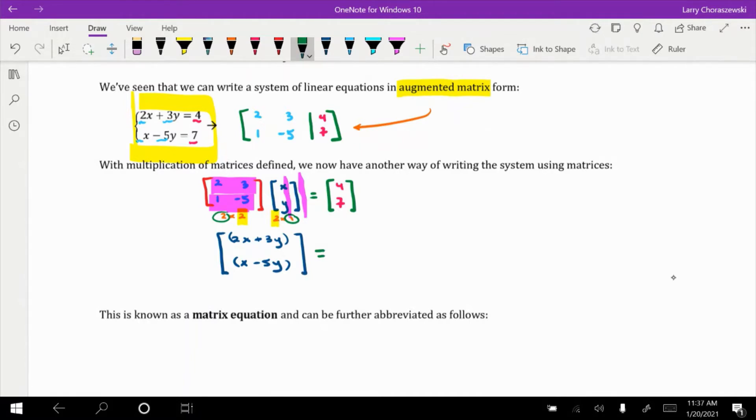Now, if this is equal to this 2 by 1 matrix with those constant values, then the only way that these two matrices could be equal to each other is if they have the same size and the entries correspond to each other. Let's assume that they are equal. First of all, the first matrix is a 2 by 1. Second matrix is a 2 by 1 as well. So, the sizes are okay. And if we assume that the corresponding entries are equal to each other, then we're able to say that 2x plus 3y is equal to 4 and x minus 5y is equal to 7. Or, in short, the equality of these two matrices tells us that 2x plus 3y is equal to 4 and x minus 5y is equal to 7. And boom, that is the original system.